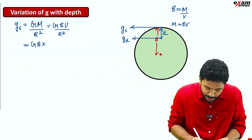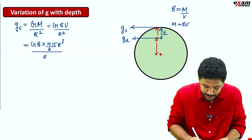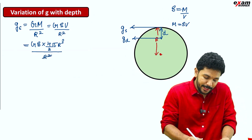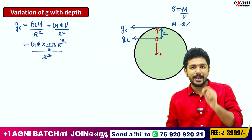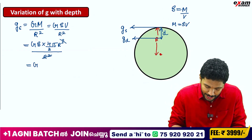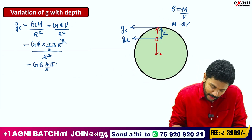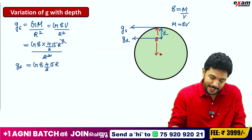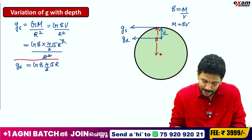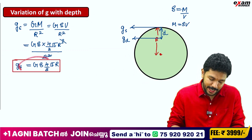So, G into rho into volume: 4 by 3 pi into R cubed divided by R squared. R cubed divided by R squared gives R. So you will get G capital G, rho, 4 by 3, pi into R. Generally, at the surface, g takes this form — this is the formula you will get used to.